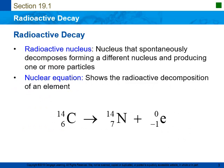We're going to begin our focus on radioactive decay. A radioactive nucleus is a nucleus that spontaneously decomposes — which means it will happen without any outside influence — forming a different nucleus and producing one or more particles as well as energy. An example of a nuclear decay equation is shown below. When we look at this nucleus here, the carbon-14 atom, please remember that the 14 represents the mass number and the 6 represents the atomic number.